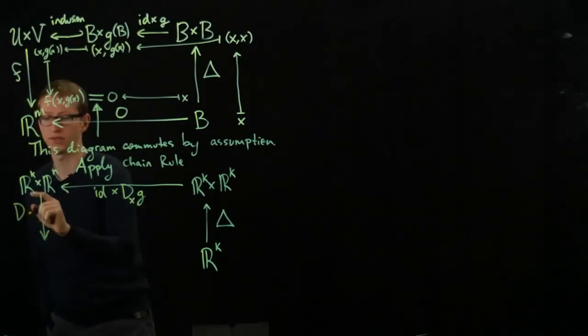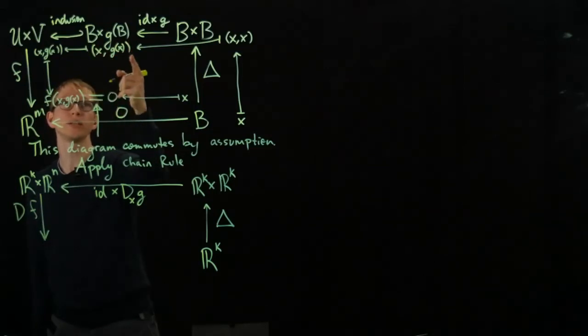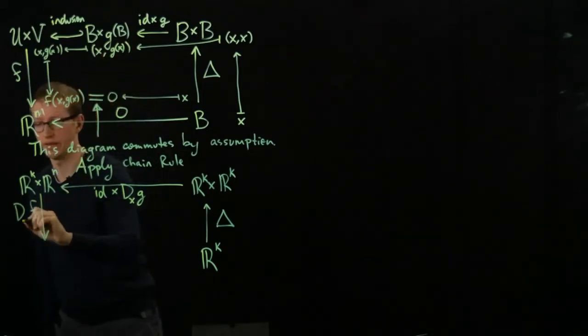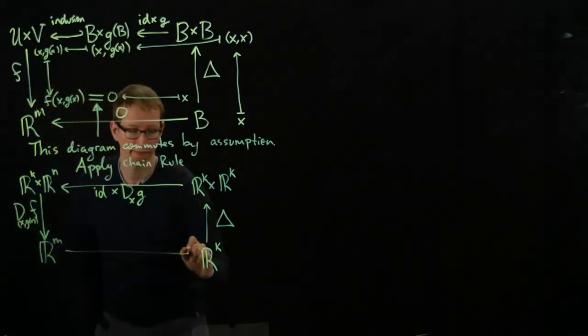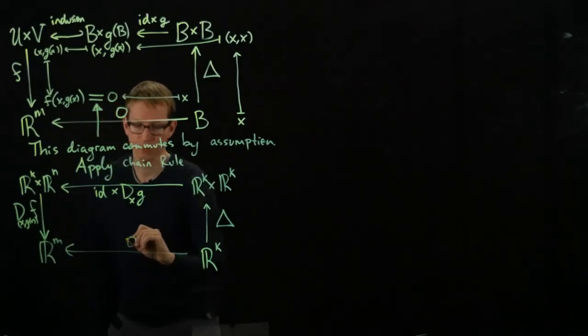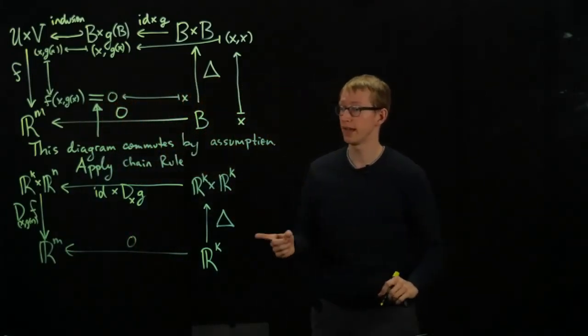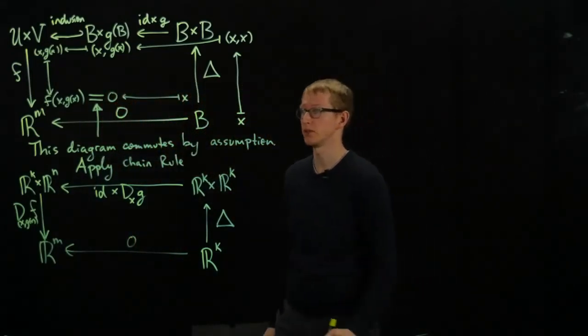And then finally, F, well this is just D of F at what point? At this point here, X comma GX. And this goes to RM. This is the zero function. The chain rule says that this diagram commutes as well.